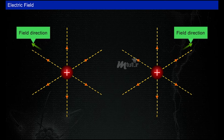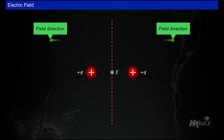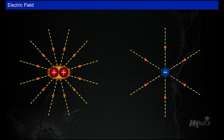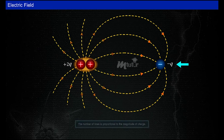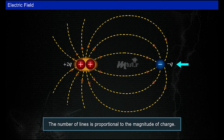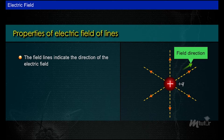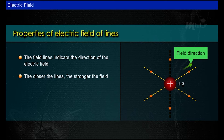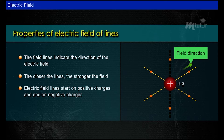The lines of force between two equal positive charges (+q and +q) repel each other, and there is a point X between them where the resultant force is zero. For two opposite unequal charges (+2q and −q), twice as many lines leave +2q as enter −q, since the number of lines is proportional to the magnitude of the charge. The properties of electric field lines can be summarized as: field lines indicate the direction of the electric field; the closer the lines, the stronger the field; field lines start on positive charges and end on negative charges; and field lines never intersect each other.